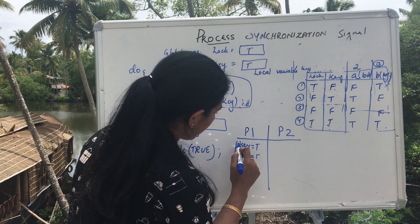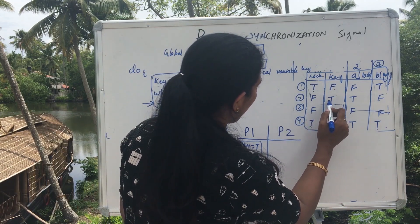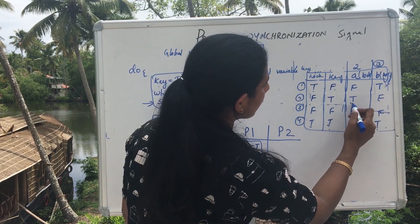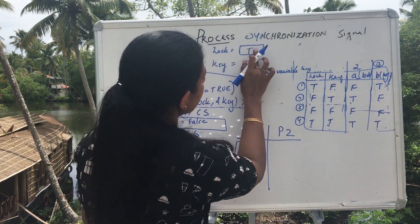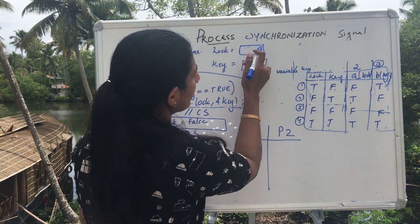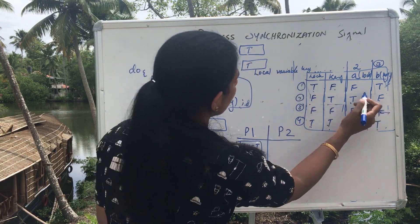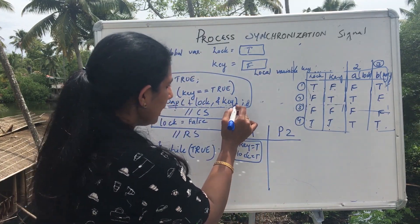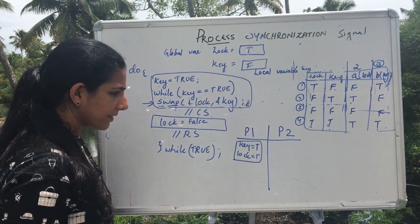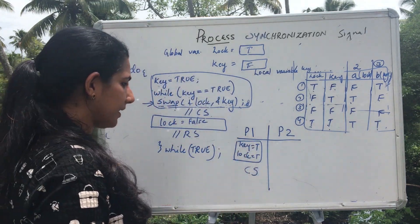Lock is initialized to false. So initially key equals true and lock equals false. After the swap function, lock will be set to true and key will be set to false. Since the key is false, the process can enter the critical section. Thus P1 enters the critical section.